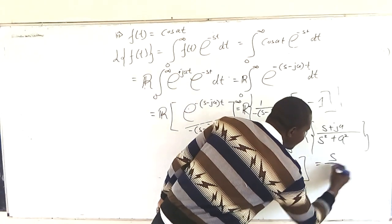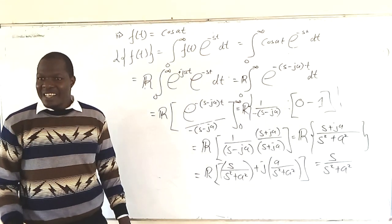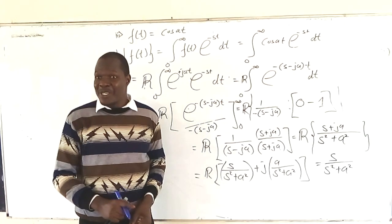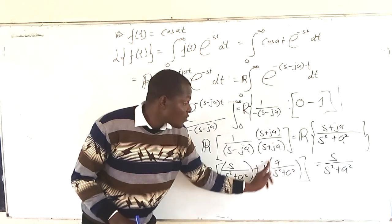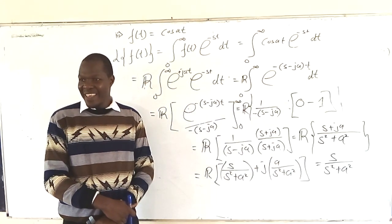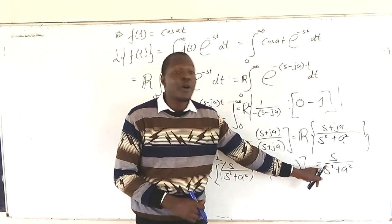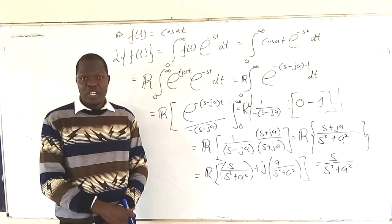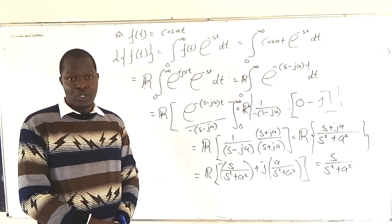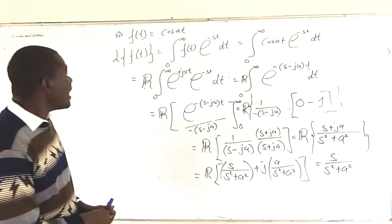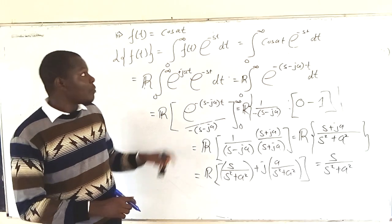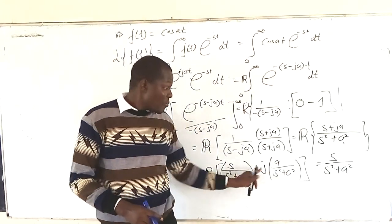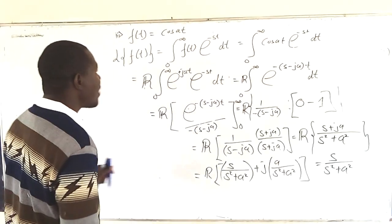The real part is s over s squared plus a squared. That real part is the Laplace transform of cos(at). So we have derived from first principles that the Laplace transform of cos(at) is s over s squared plus a squared. Laplace transform is very important in this course. Now what about sin(at)? The Laplace transform of sin(at) is a over s squared plus a squared, because it is the imaginary part.